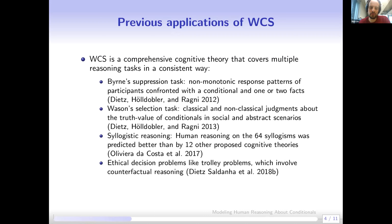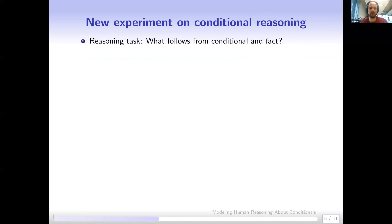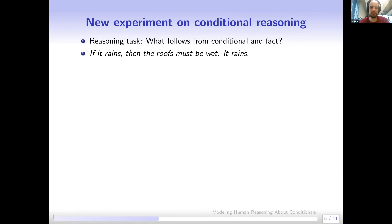There was also work on ethical decision problems like the trolley problem, which involves counterfactual reasoning — also modeled in the Weak Completion Semantics. That was an overview of past work to give context that this is already a comprehensive cognitive theory. Now in this paper we look at a new reasoning task involving conditionals, somewhat similar to the suppression task but simpler — always just one conditional and one fact, with different variations.